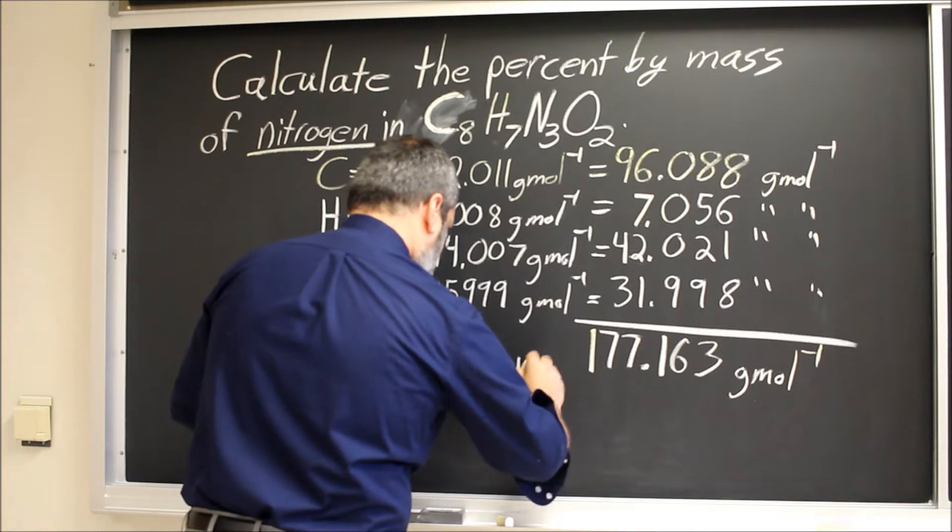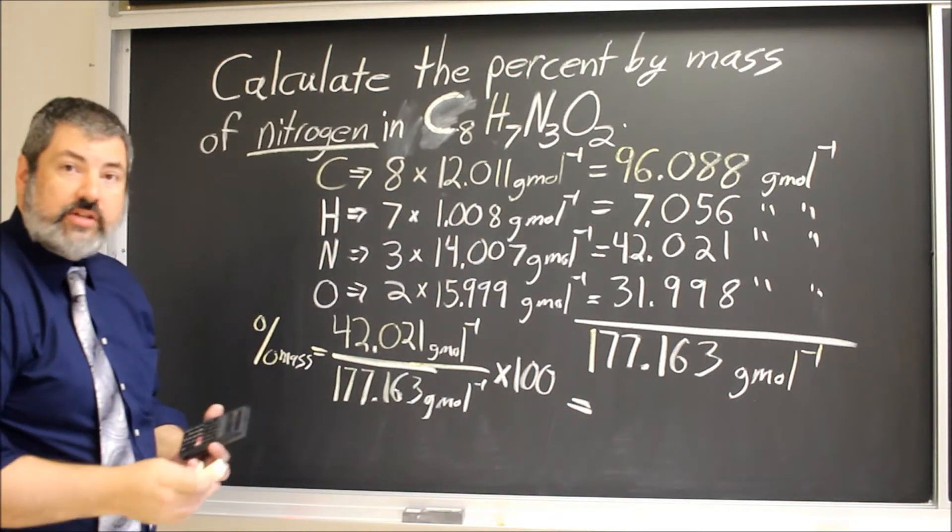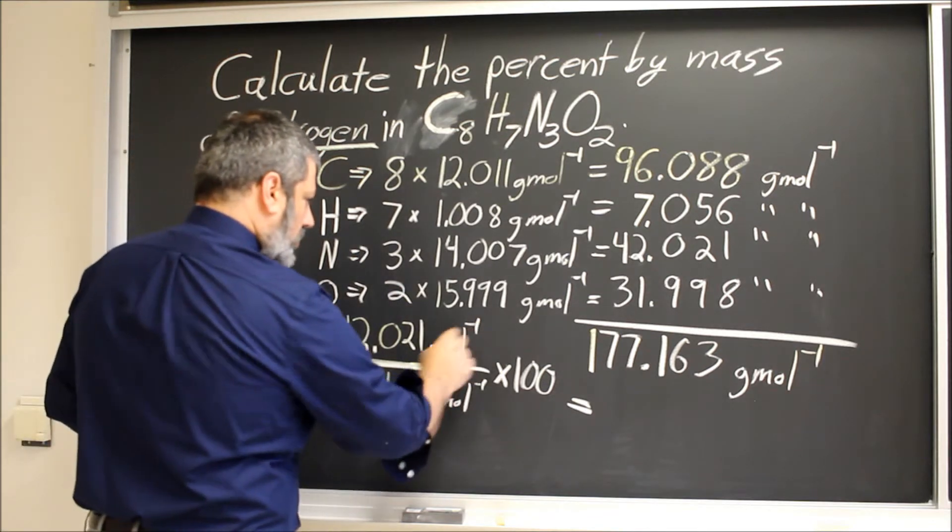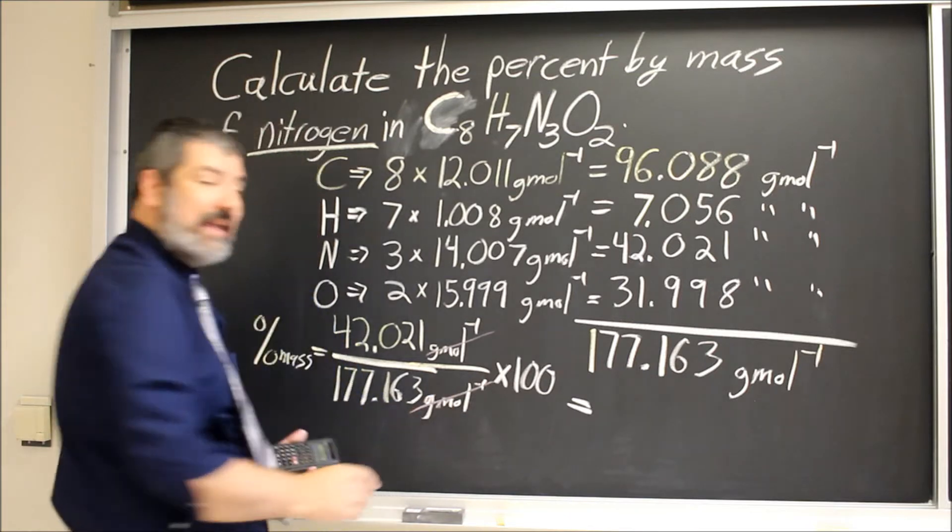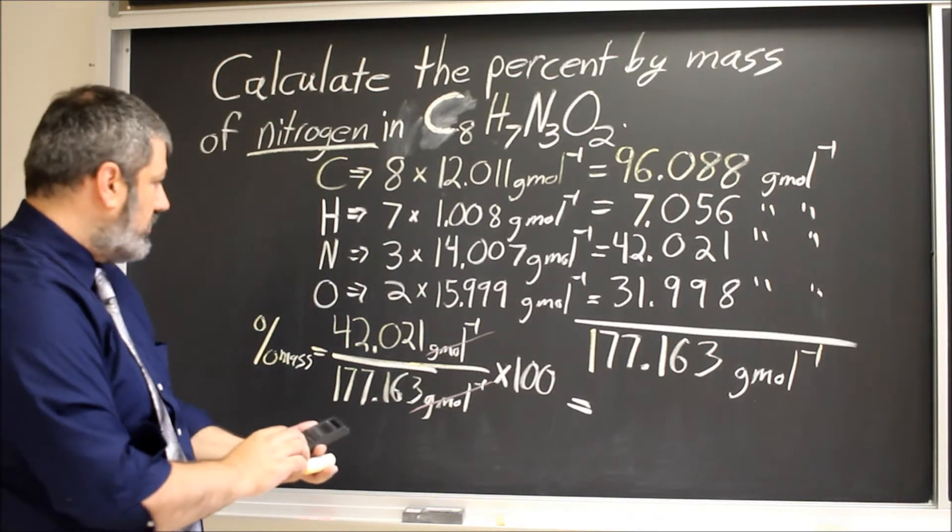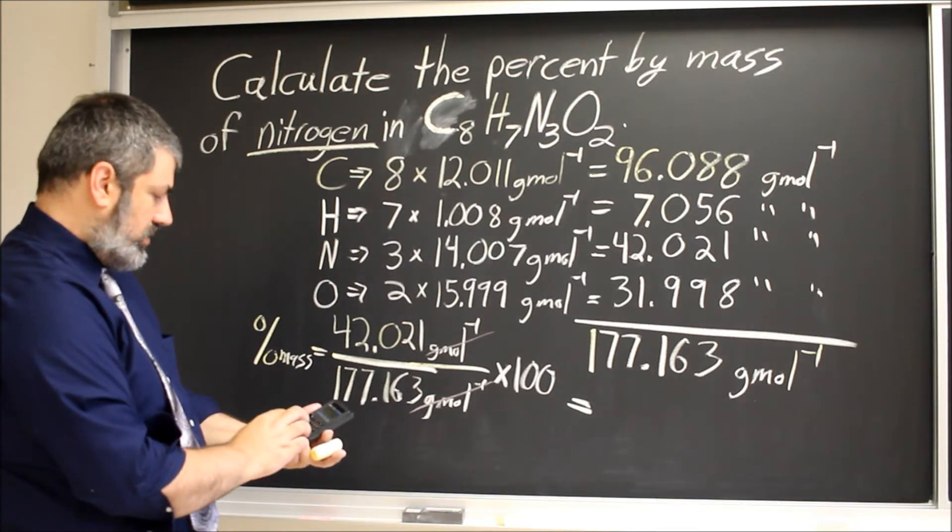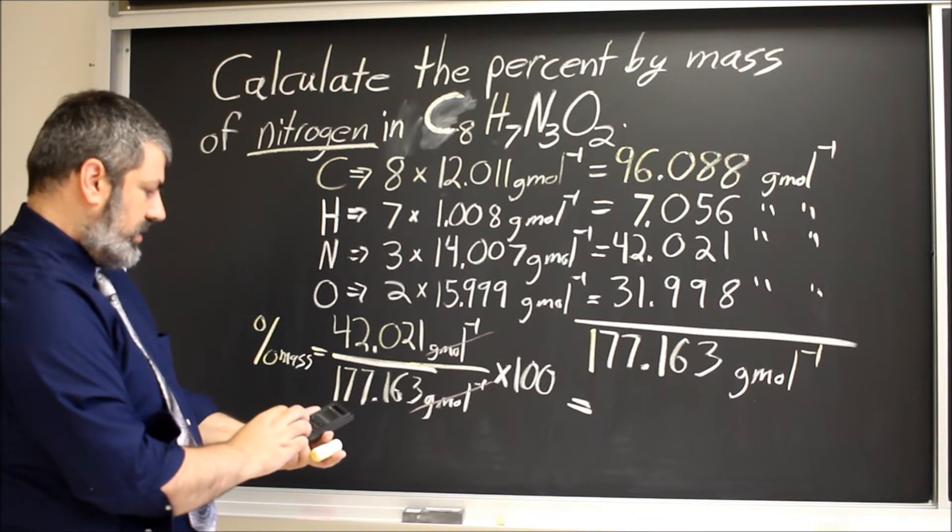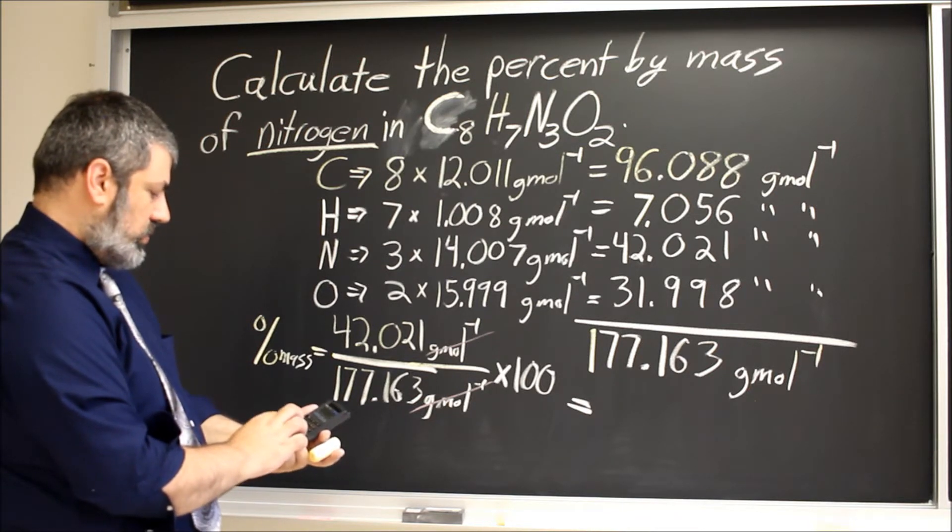Make this into a percentage. Percentages are dimensionless values, grams per mole, grams per mole. So that cancels, so there's no unit of measure. And that is consistent with a percentage. So 42.021 divided by 177.163 times 100.